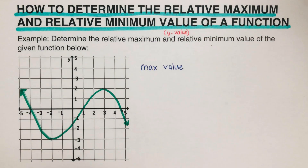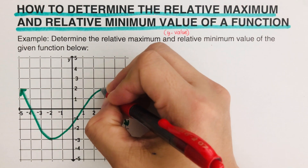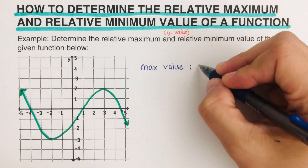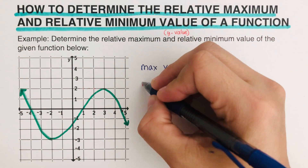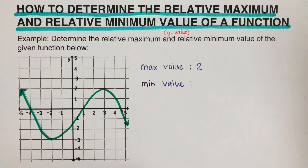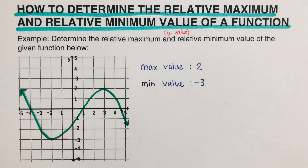When we talk about the maximum value and minimum value, we're looking for the y value. So in this case, the max value would be 2. The minimum value for this is the lowest point right here, so that should be negative 3.